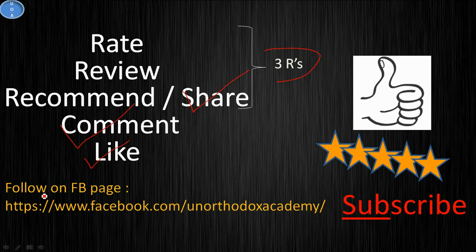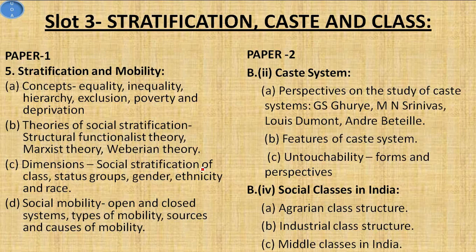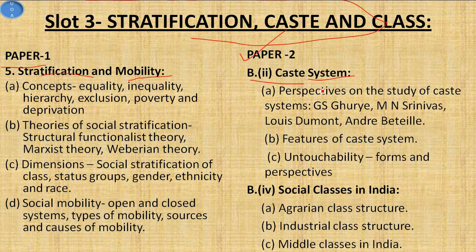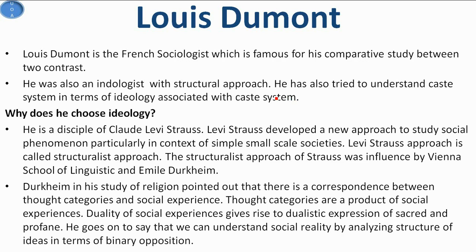You can also follow us on our Facebook page at facebook.com/unorthodox-academy. We are covering slot 3, that is stratification, caste and class. In paper 1 we have already finished stratification and mobility. In paper 2 we are covering the topic caste systems and its first subtopic, perspectives on the study of caste systems. We have completed the perspectives of G.S. Ghurye and M.N. Srinivas. In this video, we are going to cover the perspective of Louis Dumont.